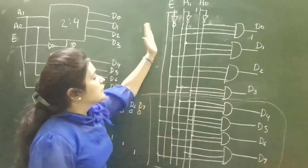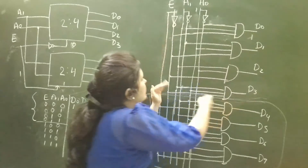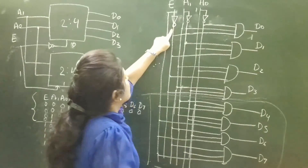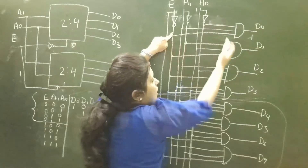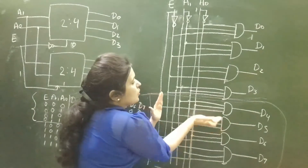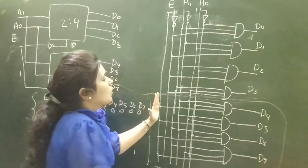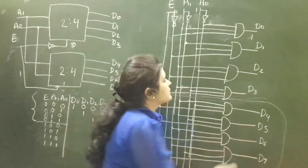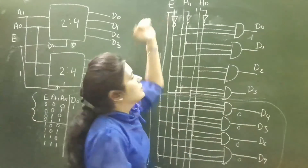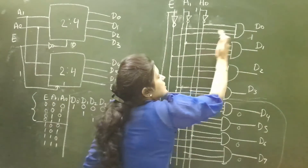This is the circuit diagram of the 3-to-8 line decoder made using two 2-to-4 line decoders. The upper four AND gates denote the upper decoder and the lower portion denotes the lower decoder. Complement of E is connected to the upper decoder and simple E is connected to the lower decoder. When E equals 0, the lower decoder outputs are all 0. When E equals 1, complement of 1 is 0 and the upper decoder outputs are all 0.